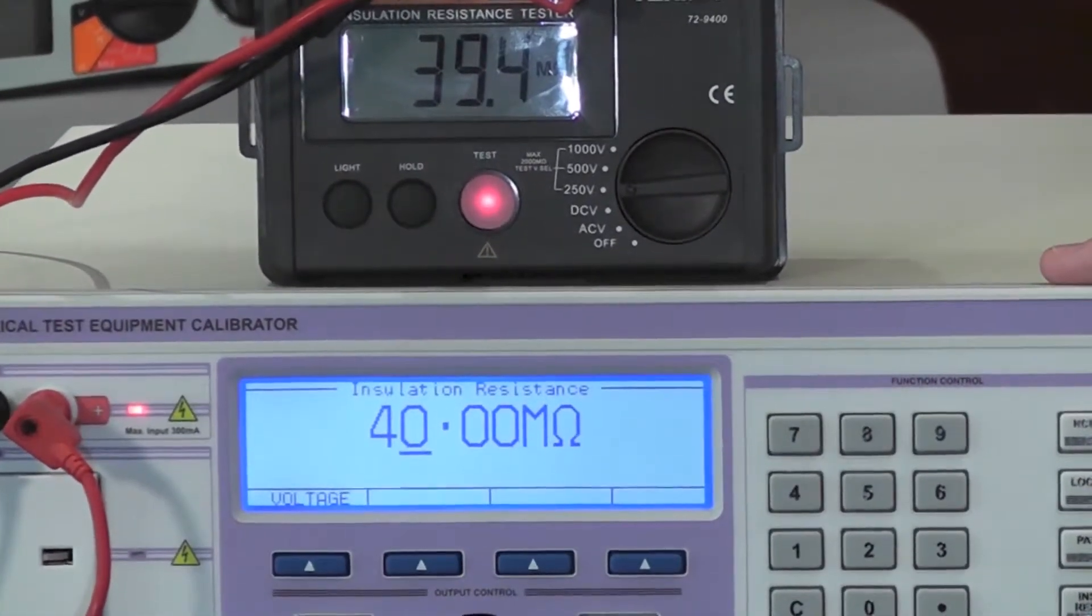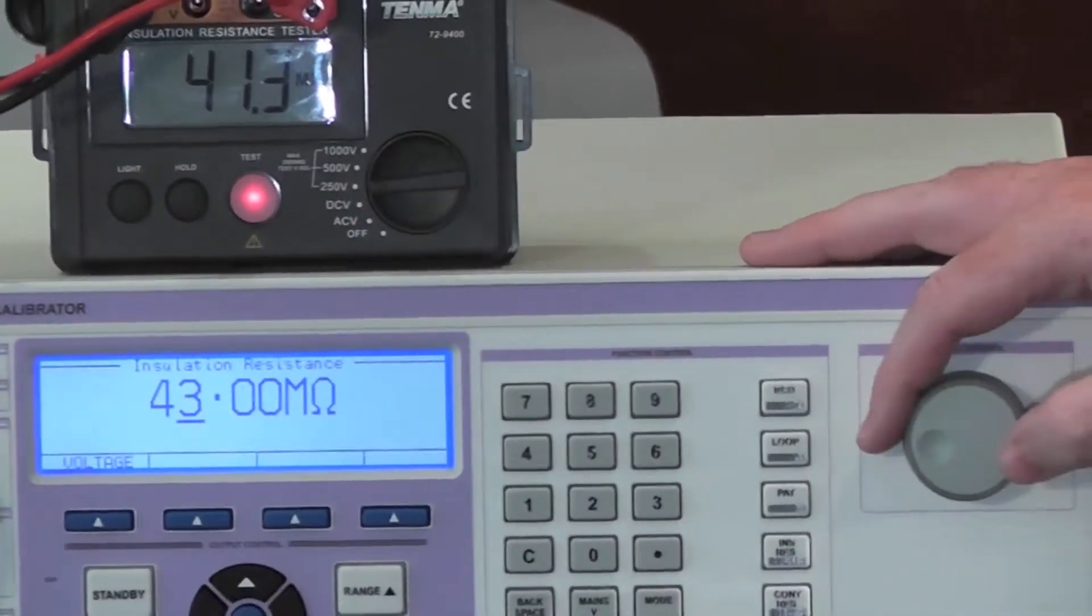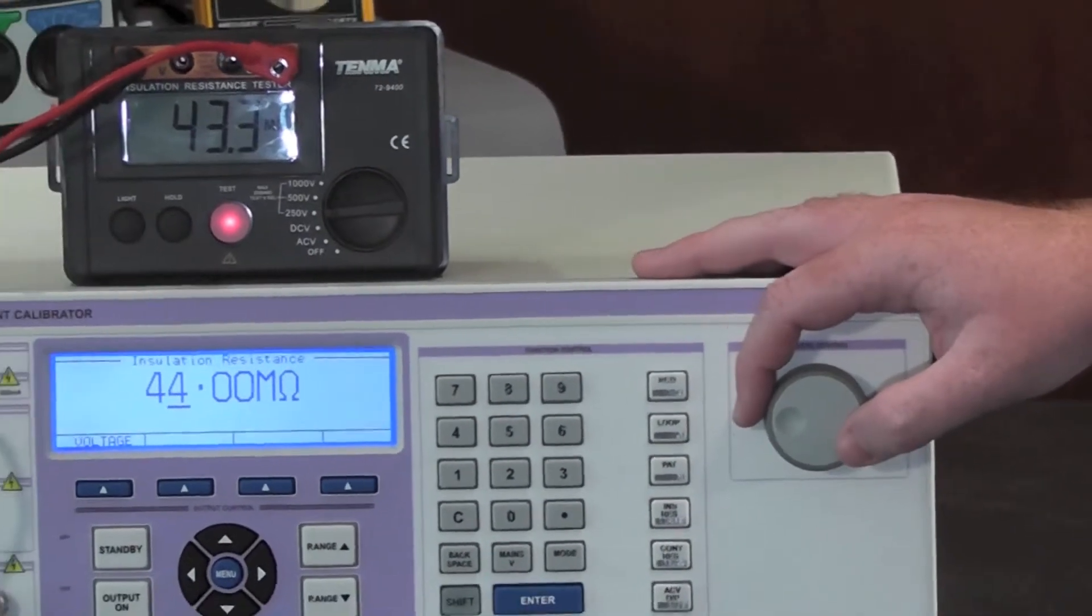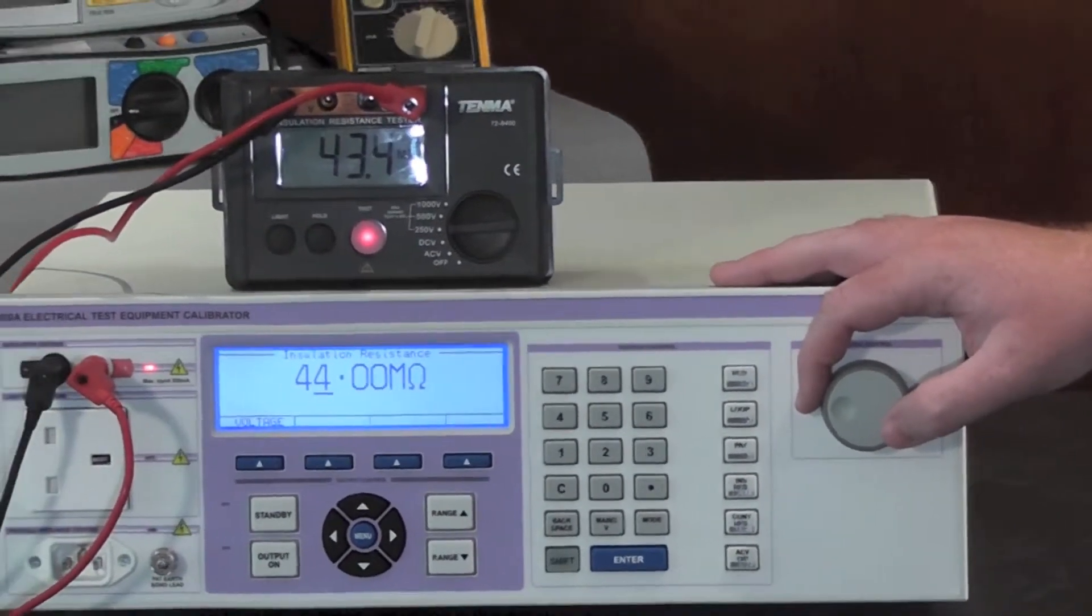The output resistance can be varied using the digital control. The 3200A is fitted with insulation resistance to 2 gigaohms as standard but can be extended to 10 gigaohms.